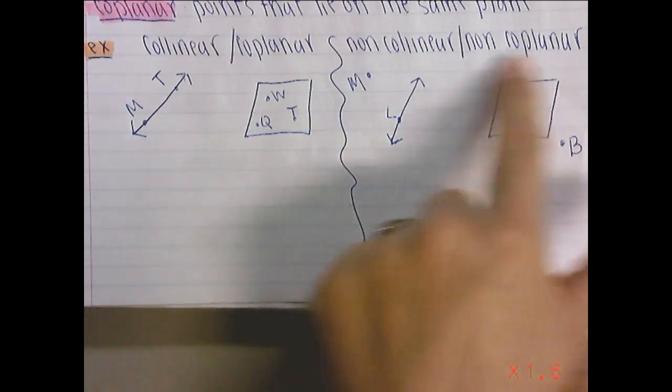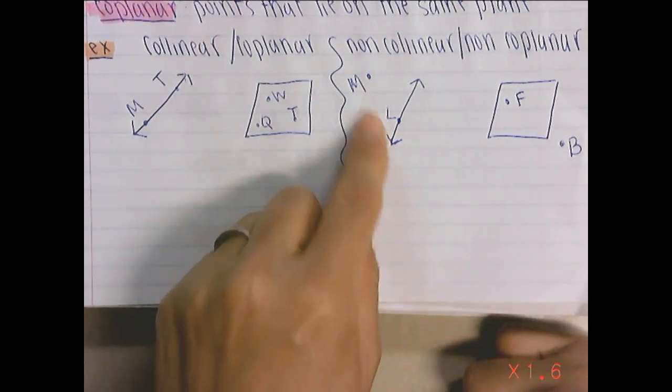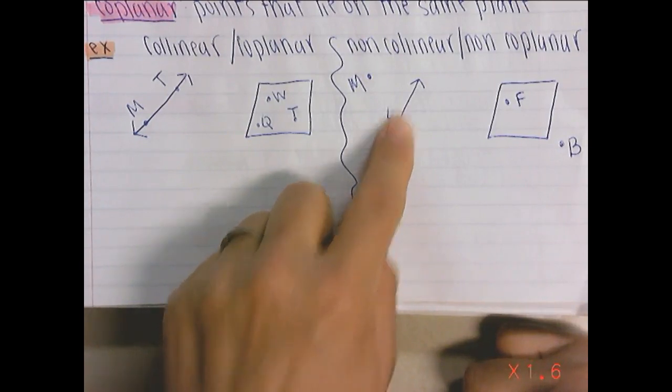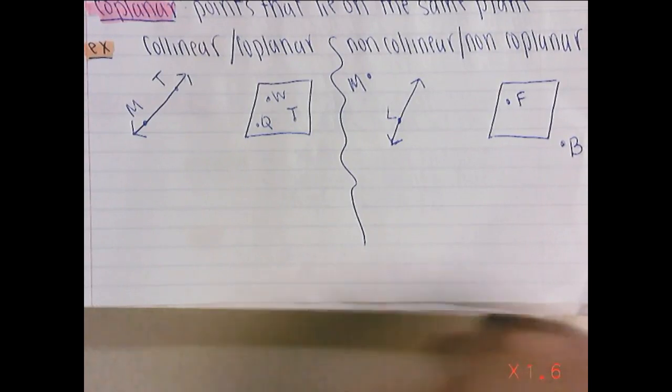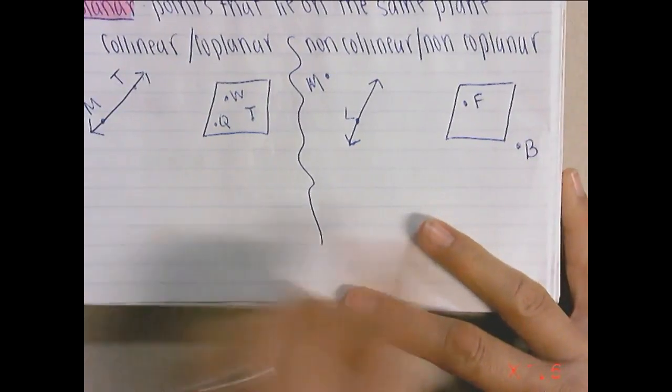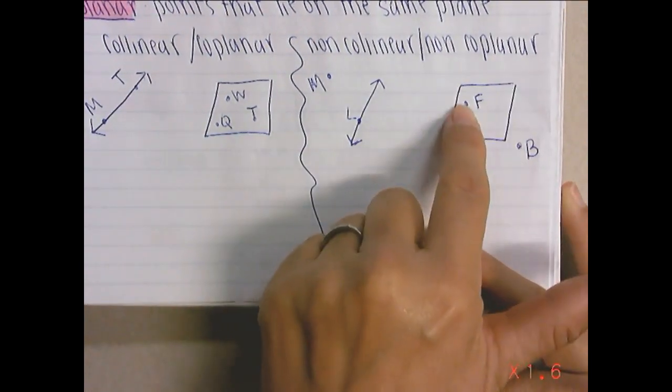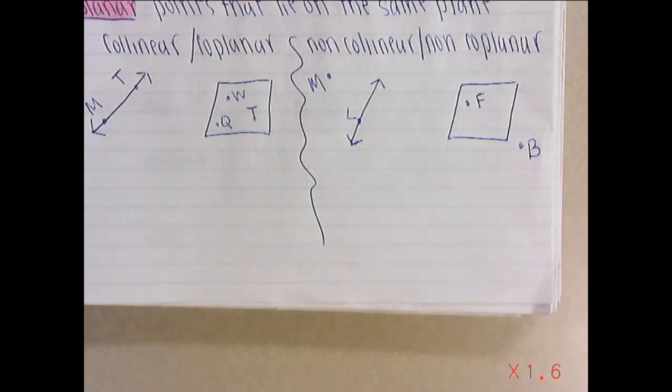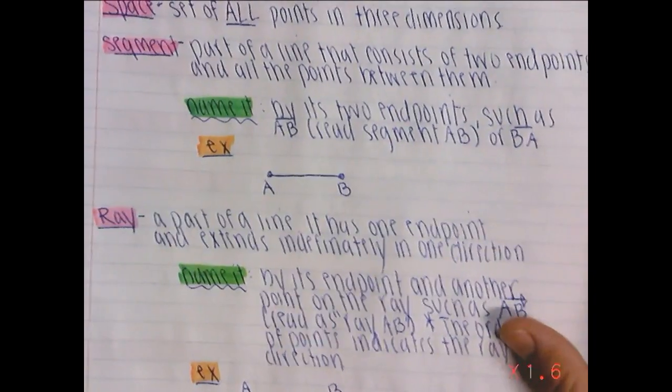Then there's non-collinear over here. Non, meaning they do not lie on the same line. We have M, not on the same line, and L, not on the same line. Here's our line. It's not crossing through both of them. They would be non-collinear. Over here, these are two non-coplanar points. Here is our plane. And F is inside of it. B is outside of it. So they would be non-coplanar.